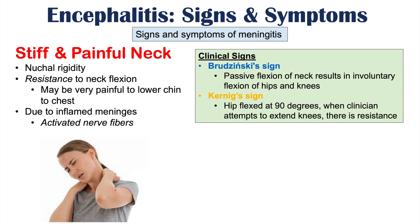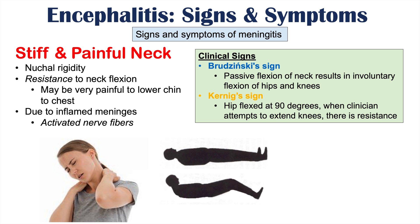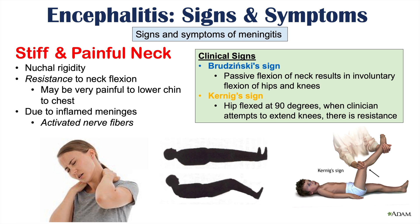There are two important clinical signs of meningitis. Brudzinski's sign is where passive flexion of the neck results in involuntary flexion of the hips and knees. Kernig's sign is when a patient lying flat with their hip flexed at 90 degrees shows resistance when the clinician tries to extend the knee, because this causes pressure within the spinal cord and meninges. Both signs can be found in meningoencephalitis.